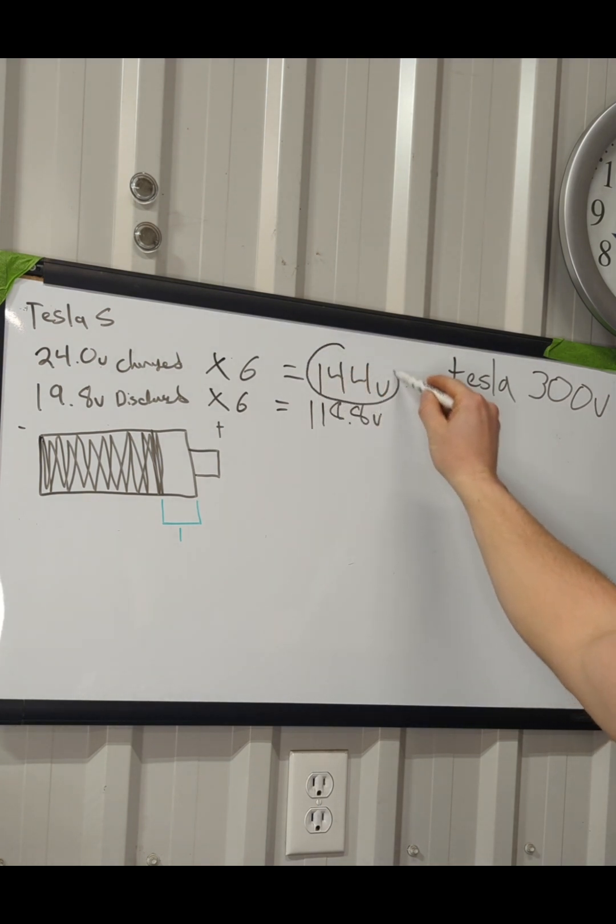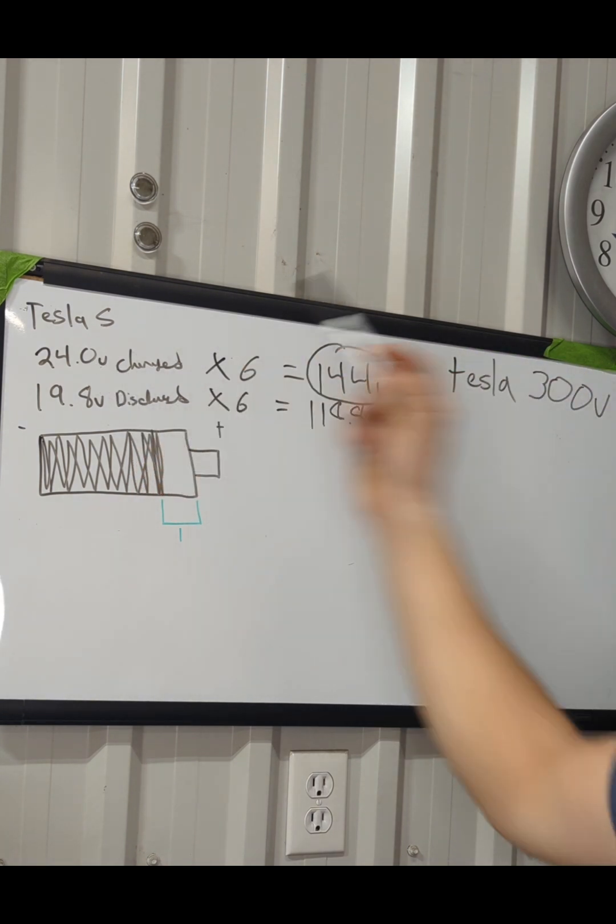A standard Tesla car is 300 volts, so you can achieve that with 13 modules. I've got just under half of what an actual Tesla S car came with. They do vary, the other cars out there I don't know exactly how many modules each one has, but this is what I'm going to choose with this car.